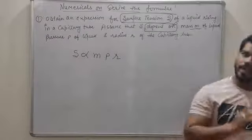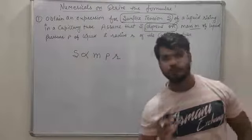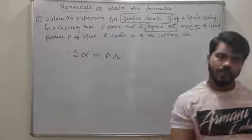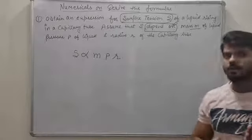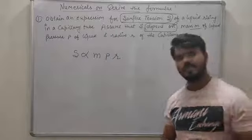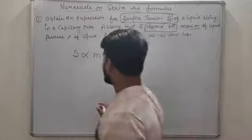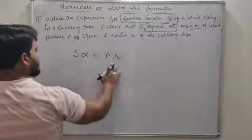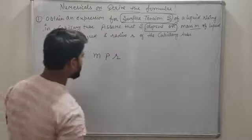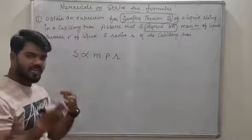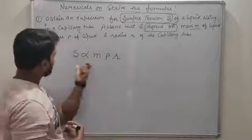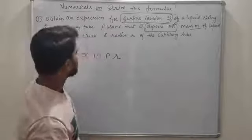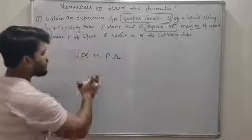आपको हर एक numerical में 3 factors मिलेंगे। 2 factors भी मिलें तो भी कोई दिक्कत नहीं, आप 2 factors से निकाल सकते हो। तो surface tension को आप इस तरीके से लिख सकते हो — जो चीज़ find out करनी होती है वो left side, और जो factors उसके ऊपर depend करते हैं वो right side।